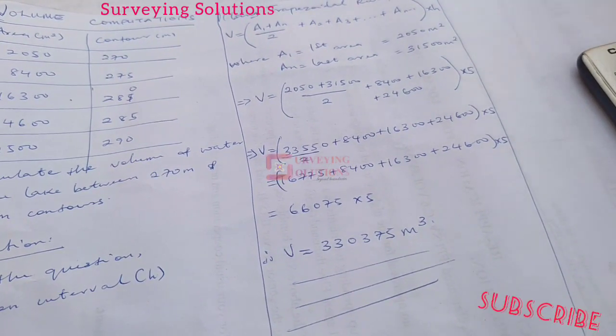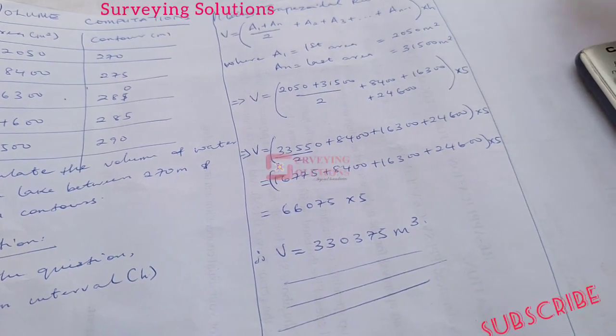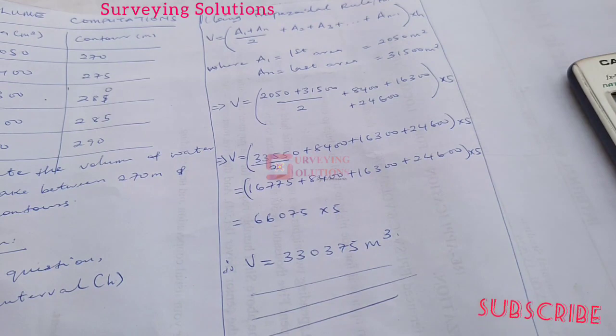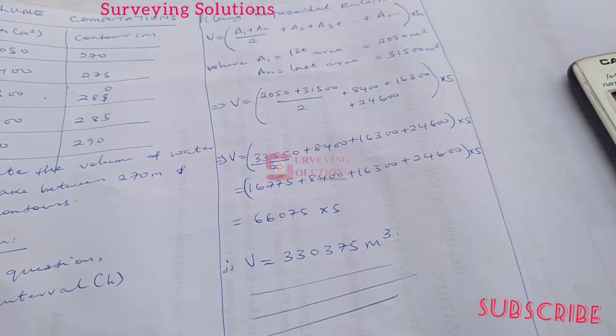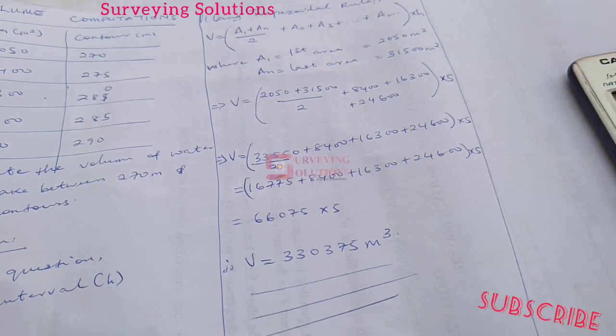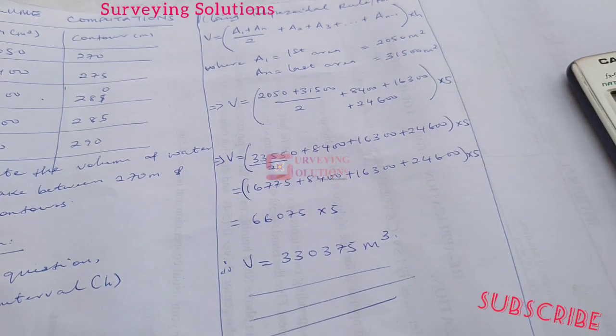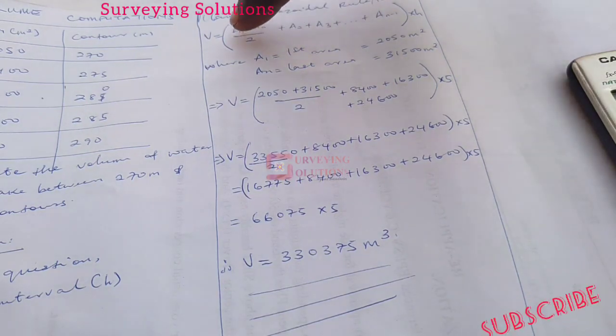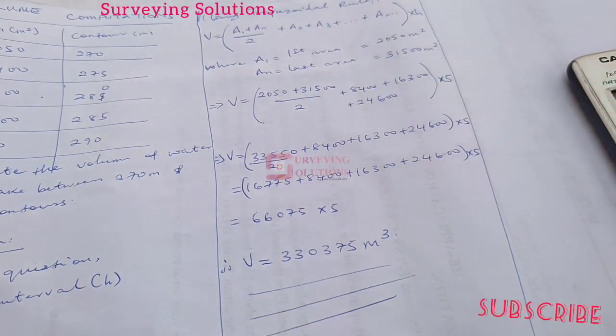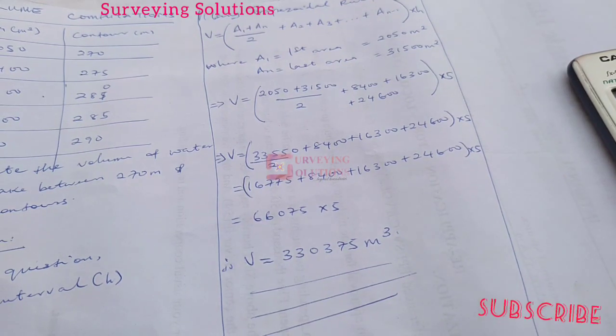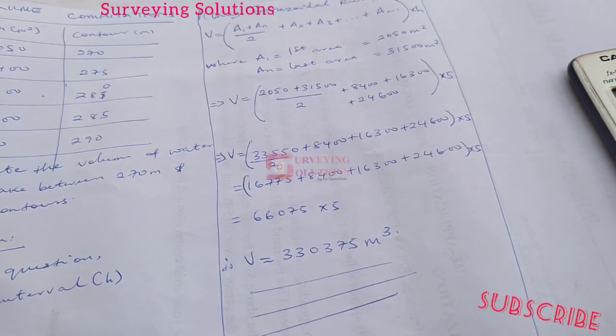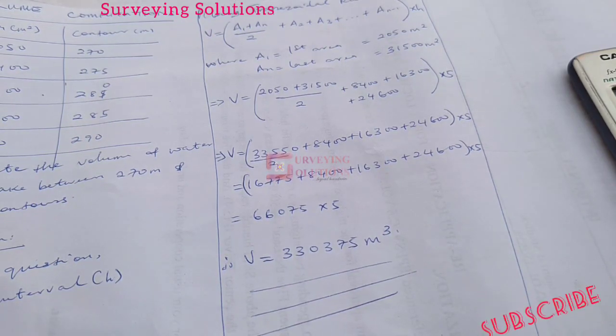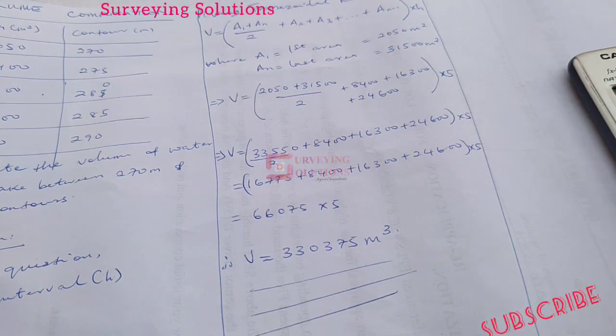In our next video or maybe subsequently on the channel, we are going to compare this volume we just got with the volume we are going to get using another method. Because there are different methods of determining or trying to compute for volumes. We have used the trapezoidal method or the trapezoidal formula or the trapezoidal rule. Subsequently, we are going to use another method on this same question and then we are going to see what the volume would be. Maybe you can do that before we get to that point so that you can see that the values are not really far apart.